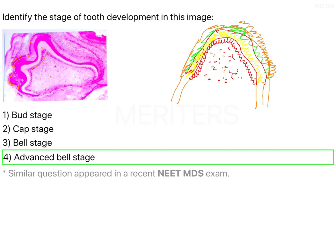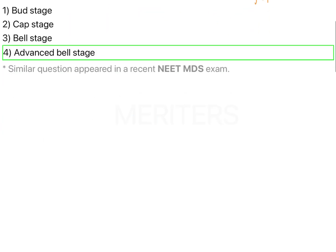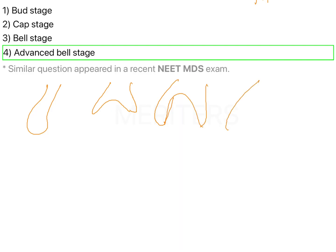When it comes to the early bell stage, it would look like this. To differentiate the different types: this is the bud, this is the cap, this is the early bell, and this is the advanced bell. That is how you differentiate between the four stages of tooth development.